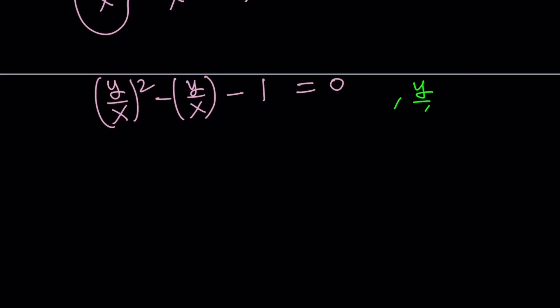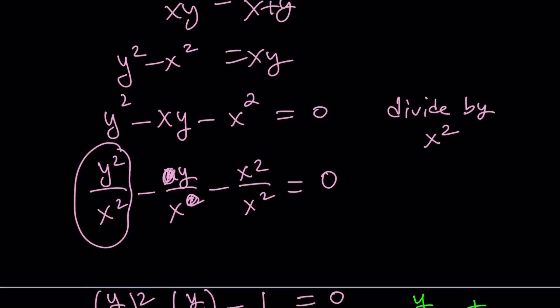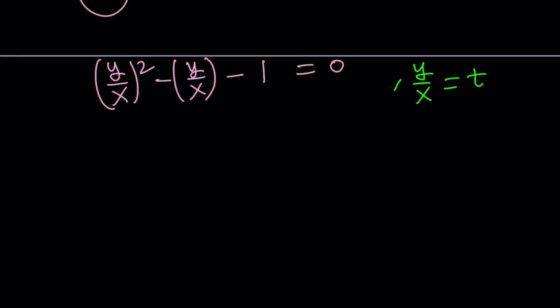That also tells you this is a homogeneous equation. You could also use y equals kx or y equals tx, and that is also going to give you the same quadratic that you're getting from here. So it's the same idea but just different paths. Okay, so y over x equals t gives us t squared minus t minus 1 equals 0.